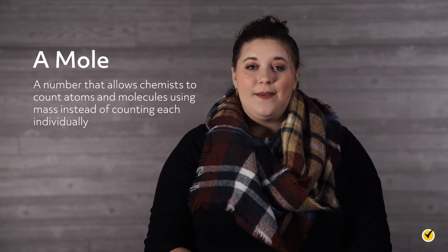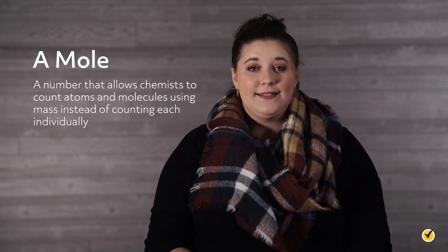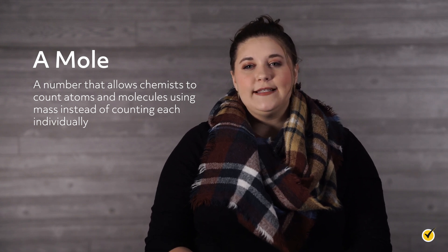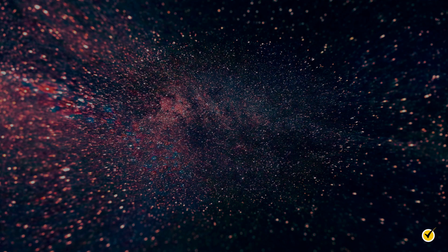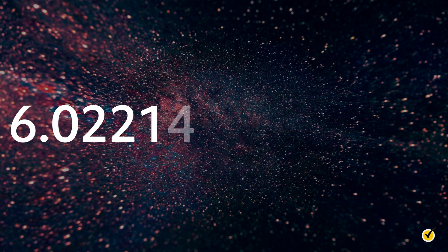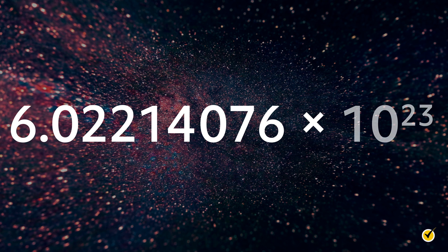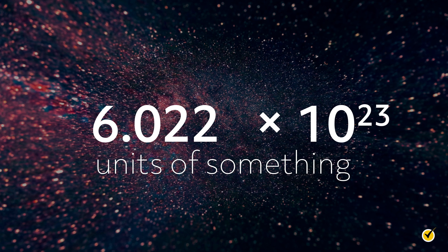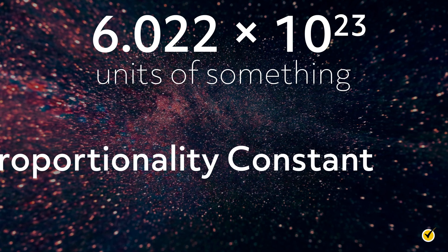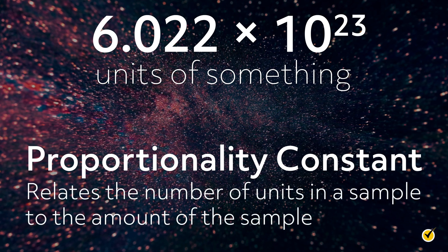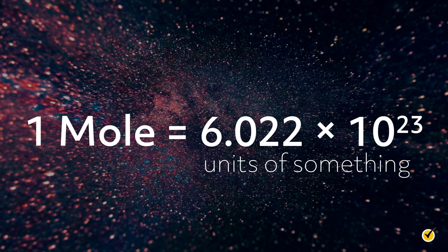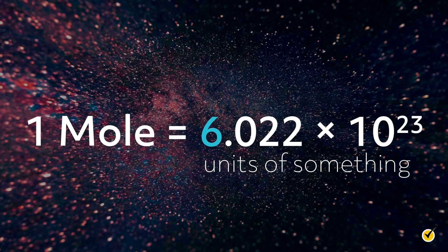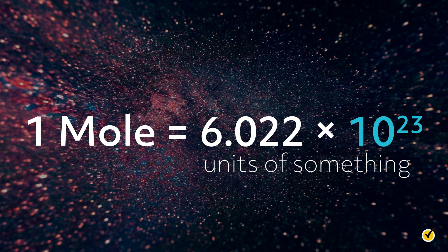To start, here's the very simplest explanation of what a mole is and what it's used for. A mole is a number that allows chemists to count atoms and molecules by using mass instead of counting them individually. By definition, a mole is 6.02214076 times 10 to the 23rd units of something, which is usually reduced to 6.022 times 10 to the 23rd. It's a proportionality constant relating the number of units in a sample to the amount of a sample. One mole equals 6.022 times 10 to the 23rd units of something.